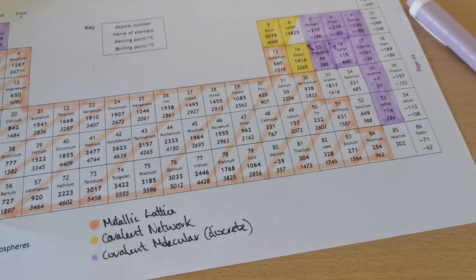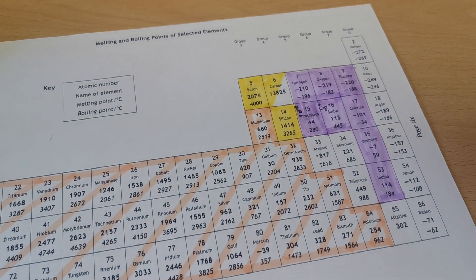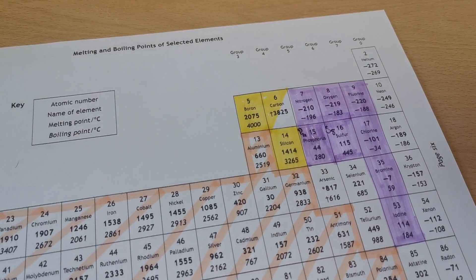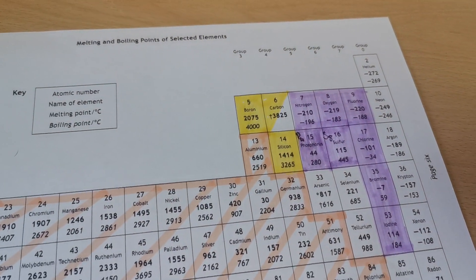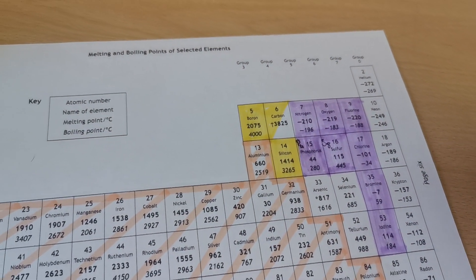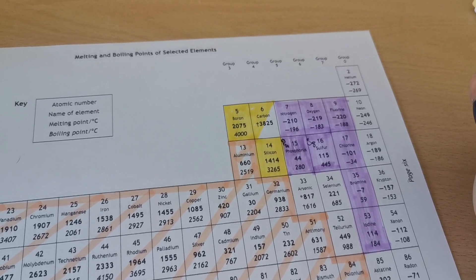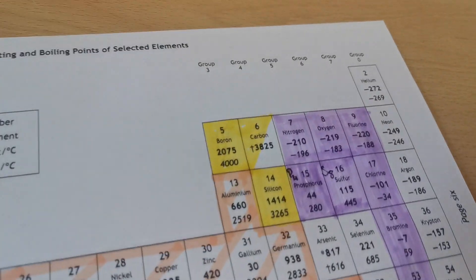The last covalent molecule is carbon. As well as existing as a covalent network, carbon can exist as a discrete covalent molecule in the form of something called fullerene. Fullerene is just a big ball-like structure consisting of only carbon atoms. Their full name is Buckminster fullerene, so sometimes they'll get called buckyballs.